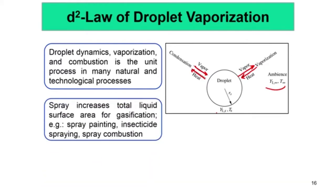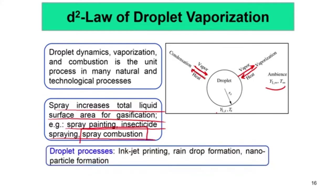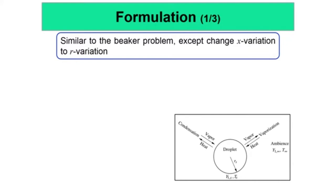We do a spray because a spray increases the total liquid surface area for gasification — for example, spray painting, spray drying, and spray combustion, which is the process of interest in air-breathing combustion engines. Similar to the bigger problem, we consider the droplet evaporation problem, except that instead of Cartesian coordinates we choose spherical coordinates. It is one-dimensional because we consider the droplet to be symmetric in the azimuthal and zenith planes, and we only have r-variation.